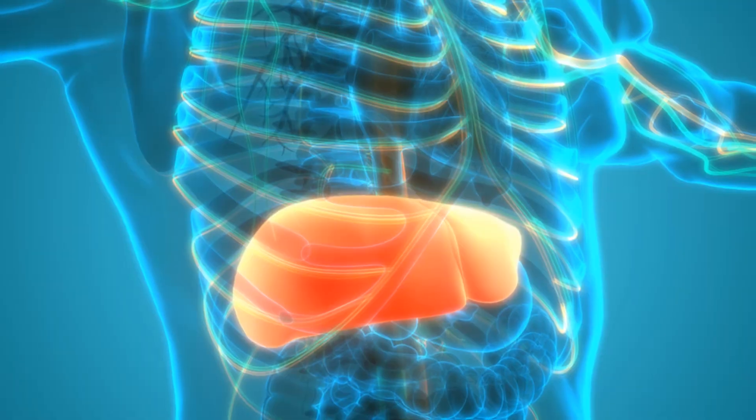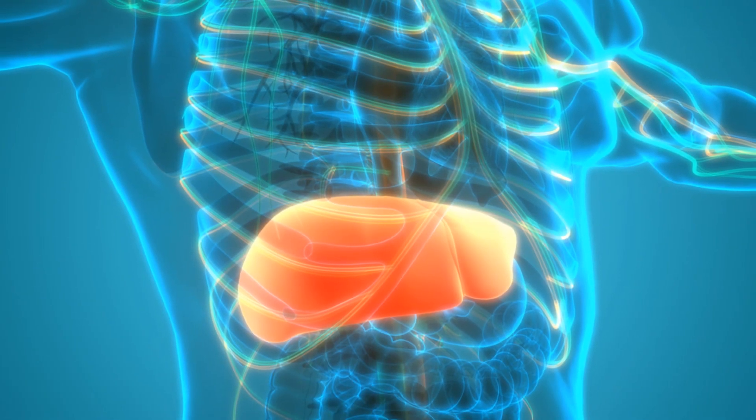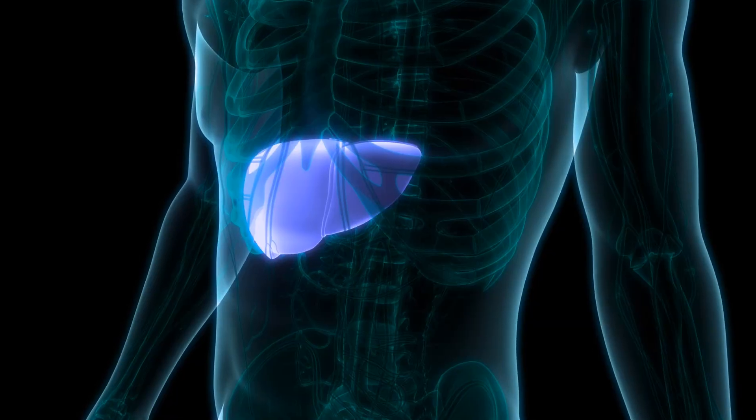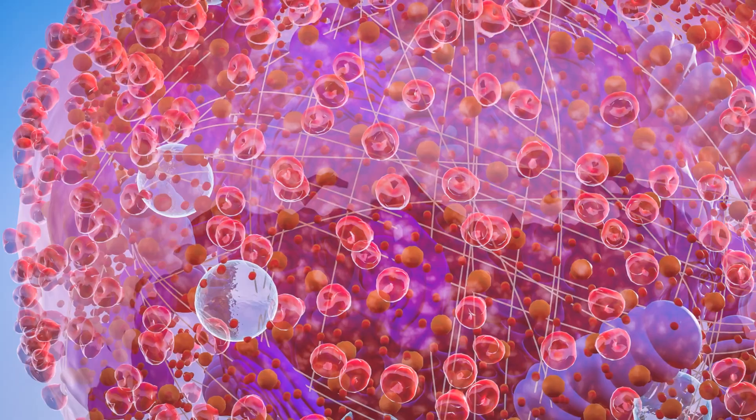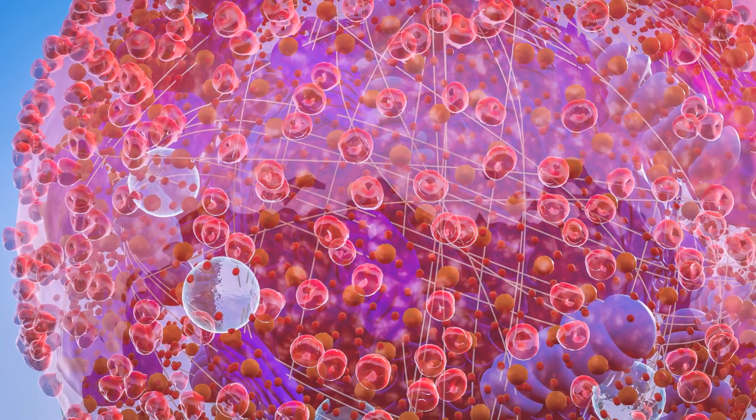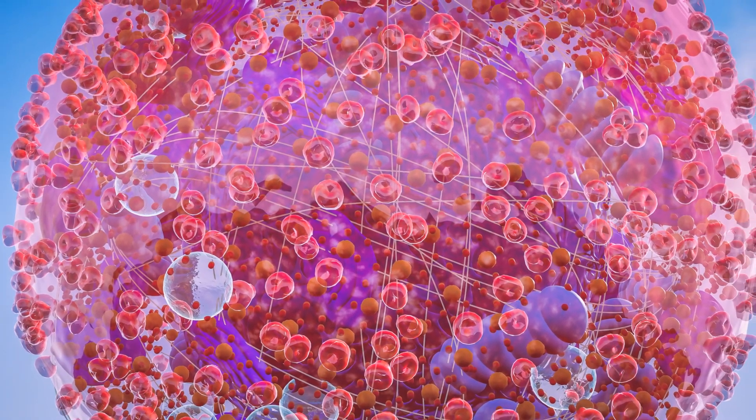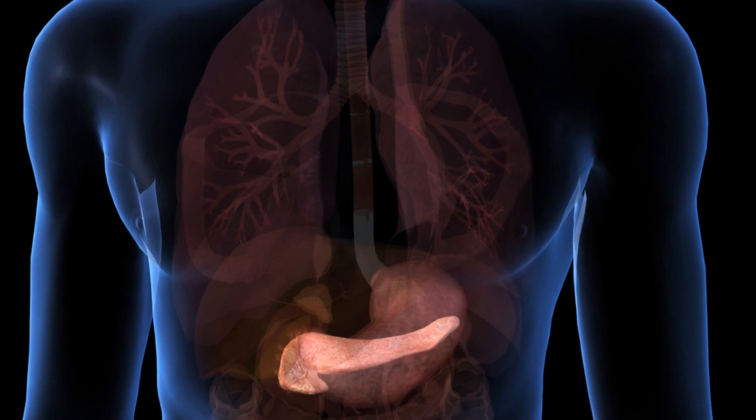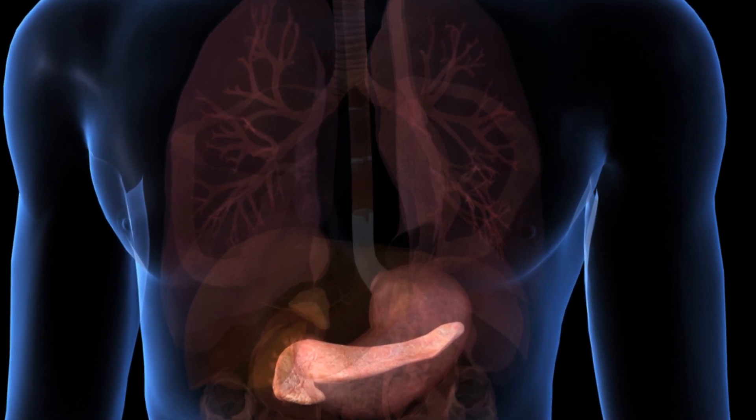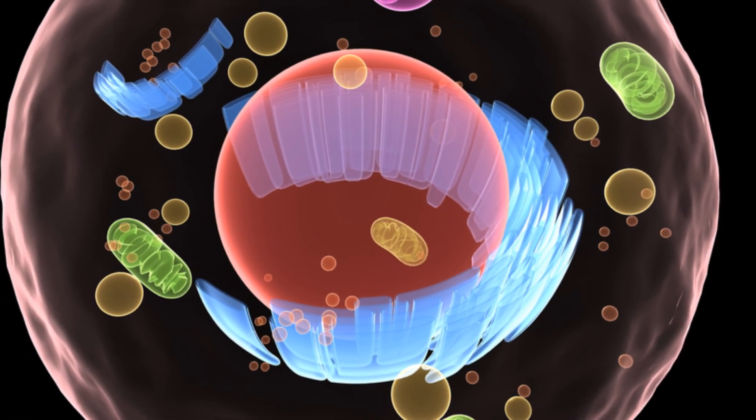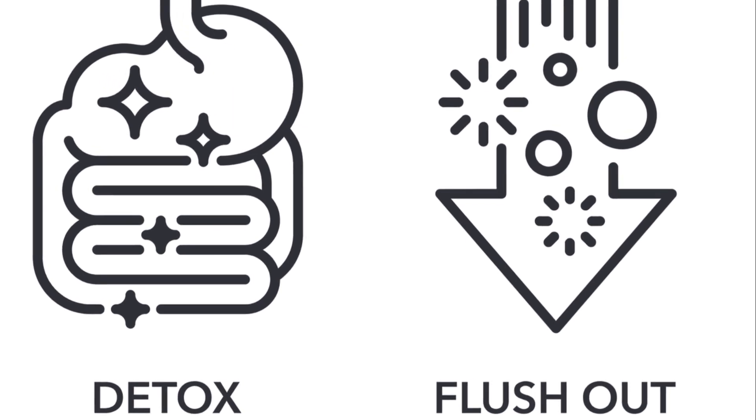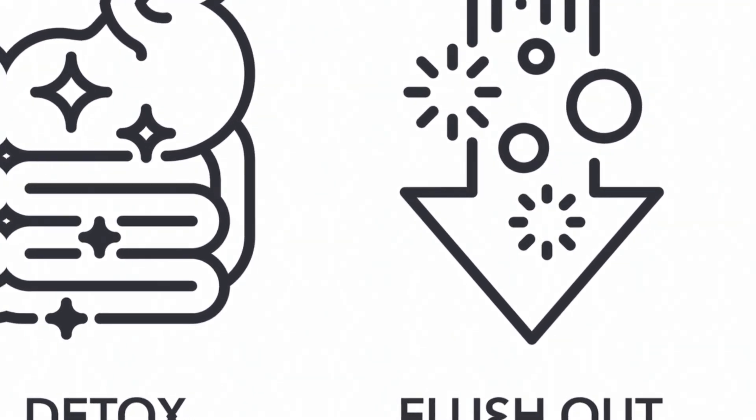The smooth ER is also involved in calcium storage and release. Calcium is a ubiquitous signaling molecule that plays a role in a wide range of cellular processes, including muscle contraction, neurotransmitter release and cell division. The smooth ER acts as a reservoir for calcium, releasing it into the cytoplasm in response to specific signals. The smooth ER is a versatile organelle that plays essential roles in lipid metabolism, detoxification and calcium signaling. It's essential for maintaining cellular homeostasis and protecting the cell from damage.